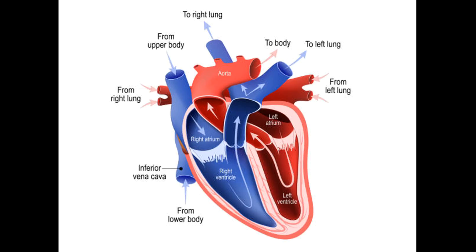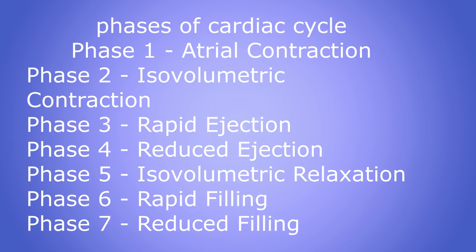The average heart beats 72 times per minute, meaning one cardiac cycle is 0.8 seconds. In that 0.8 seconds, the atria remain relaxed for 0.7 seconds — Atrial Diastole is about 0.7 seconds — and ventricles remain relaxed for 0.5 seconds — Ventricular Diastole lasts about 0.5 seconds. Atria contract for 0.1 seconds — Atrial Systole is 0.1 seconds — and ventricles contract for about 0.3 seconds — Ventricular Systole is about 0.3 seconds. To see systole and diastole in detail, the cardiac cycle is further divided into 7 phases.